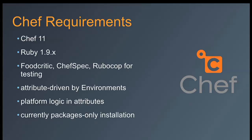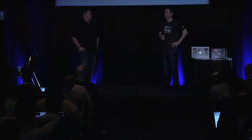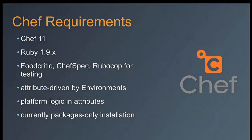Currently the cookbooks deploy OpenStack via packages. For Ubuntu we're using the LTS packages from the Cloud Archive PPA. For Red Hat it's a mix of RDO and related stuff, and IBM has their own Red Hat packages that are supported. It's all hidden away from you as an end user unless you care — it's over in the attributes files.